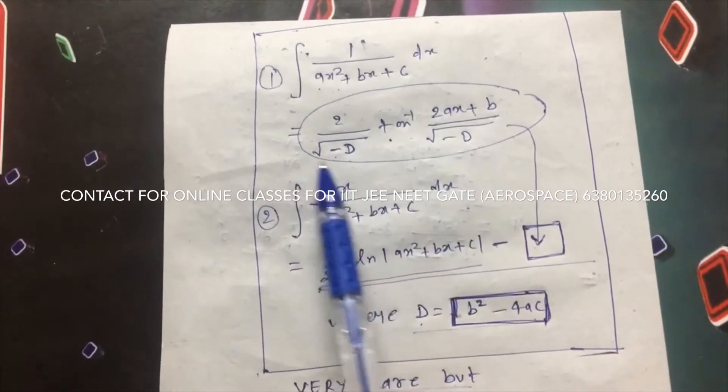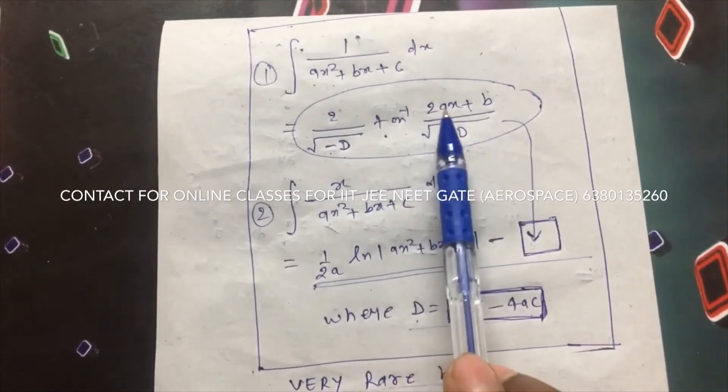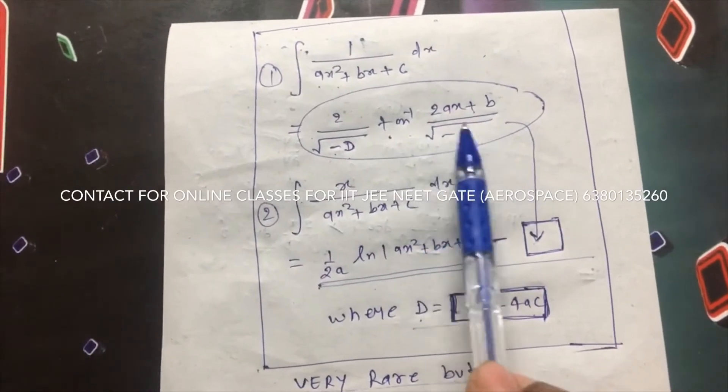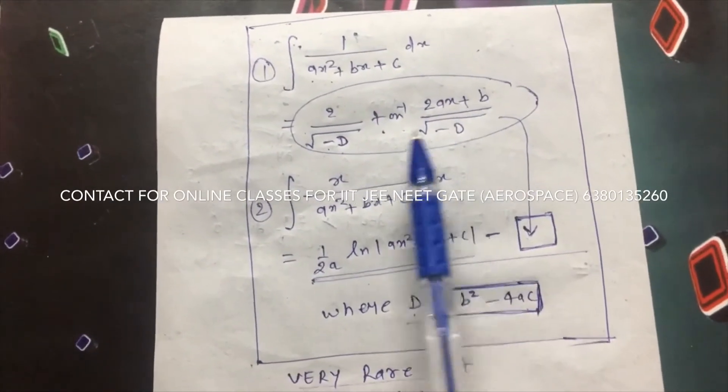Plus b. So it's 2 by under root minus d, tan inverse of 2ax plus b by under root minus d.